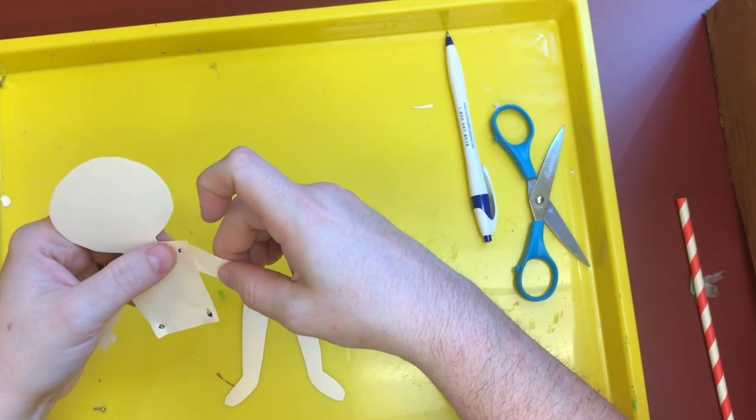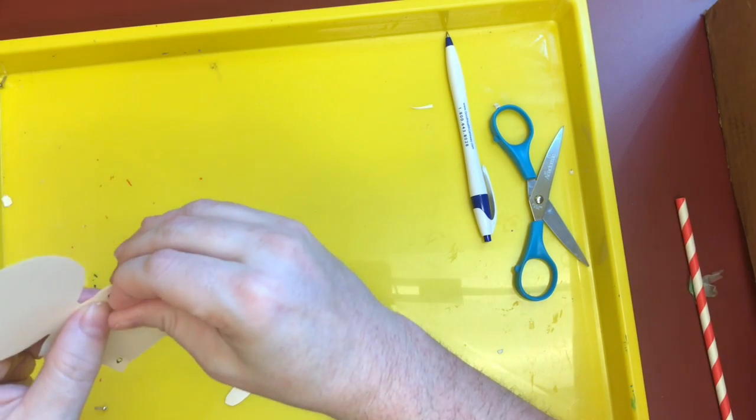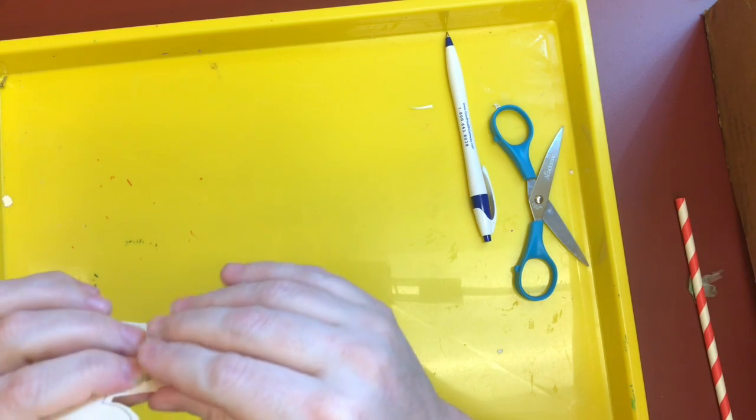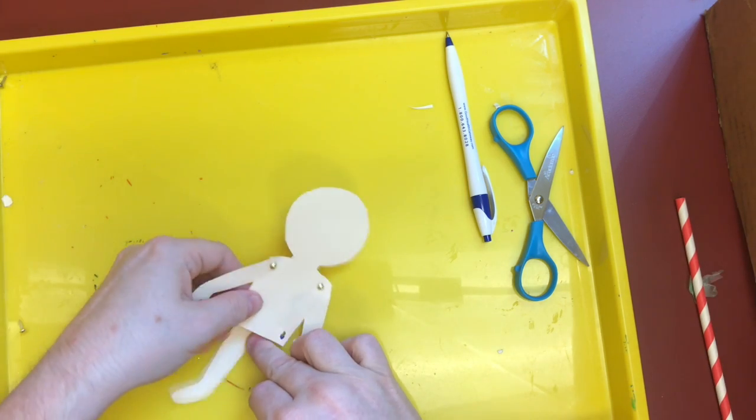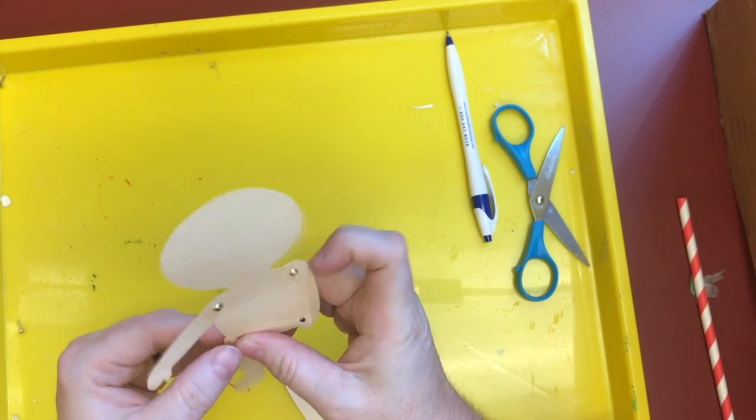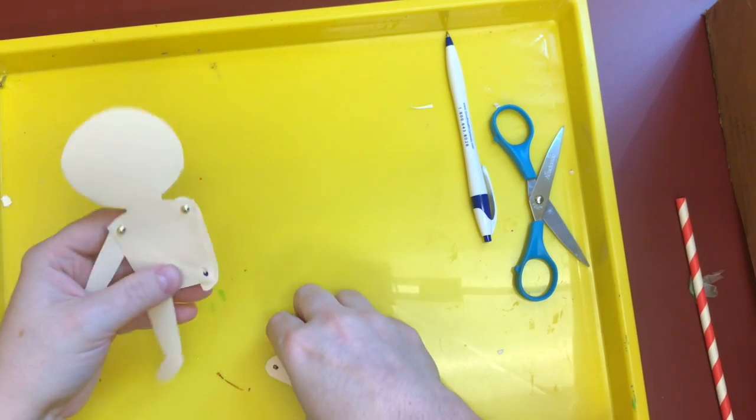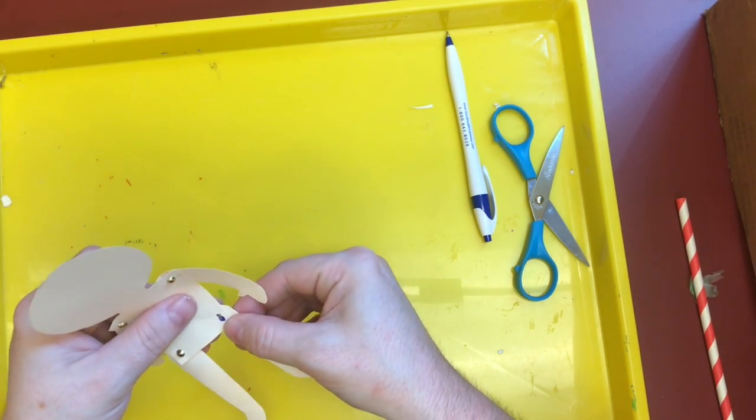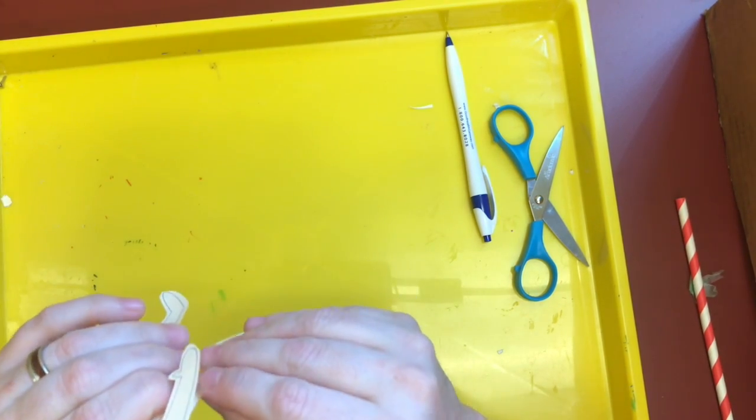I like to put the arms and legs behind the puppet's body because I think it makes it a little bit easier to decorate later. But you can choose to do it the other way around if you'd like. Neither way is wrong. And there we have our puppet.